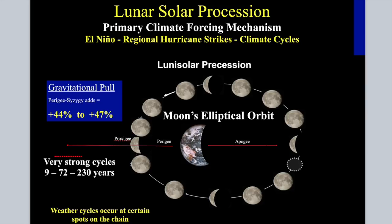An eclipse is an Earth-Moon-Sun alignment. But the power of the gravitational tug on the Earth also depends on how far the moon is away from the Earth. If it's closer to the Earth — a close approach — it will add a lot of gravitational tug. What I look at are the stronger cycles where you have not only a close approach of the moon to the Earth, but also the alignment of the Earth-Moon-Sun. So we're looking at two factors: the gravitational pull from the alignment and from the close approach.